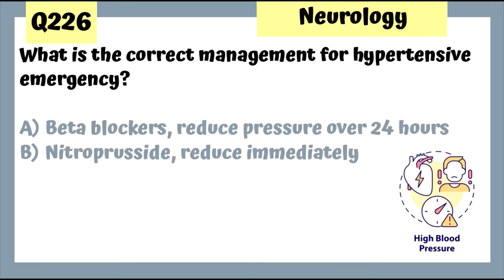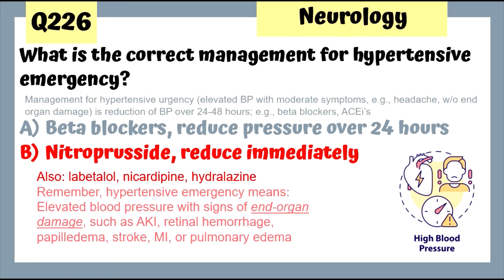Question 226: For hypertensive emergency we use nitroprusside to reduce blood pressure immediately — that's where we see signs of end organ damage. Others include labetalol, nicardipine, and hydralazine. Beta blockers are used for hypertensive urgency, where we do not see end organ damage. Question 227: Tourette's syndrome is diagnosed by motor tics and phonic tics every day or nearly every day for one year. Main therapy is VMAT2 inhibitors such as tetrabenazine.